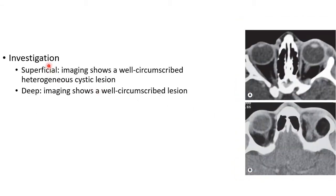Coming to investigations done for a case of dermoid cyst, we can do a CT scan. In case of superficial dermoid cyst, imaging will show a well-circumscribed heterogeneous cystic lesion, as you can see in this picture. In case of deep dermoid cyst, there will also be a well-circumscribed lesion, as seen in this picture.